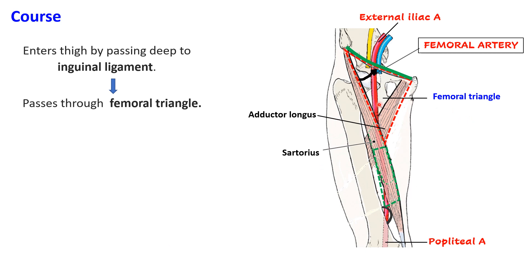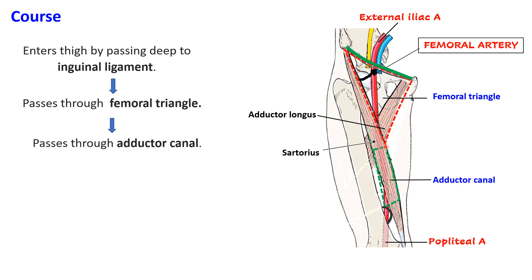In the femoral triangle it is related medially to the femoral vein and laterally to the femoral nerve. It passes through the femoral triangle and at its apex enters into the adductor canal — also known as the subsartorial canal, the overlying muscle being sartorius.